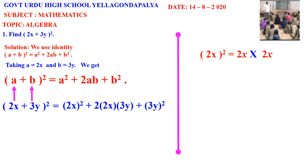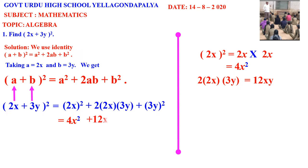Now let us expand each term. 2x whole square: 2x into 2x is 4x square. Then, 2 into 2 is 4, and 4x into 3 is 12, and x into y is xy, giving 12xy. Then, 3y whole square: 3y into 3y is 9y square.